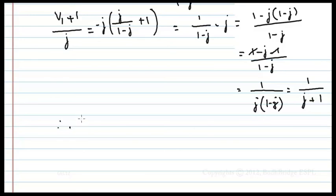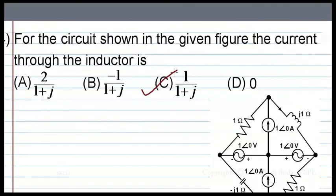Therefore, current in the inductor Il is equal to 1 by 1 plus j, which is option C.